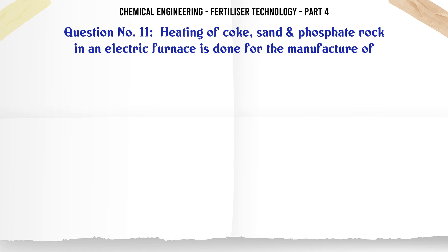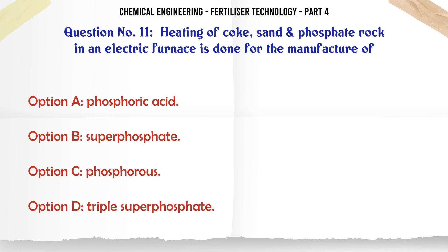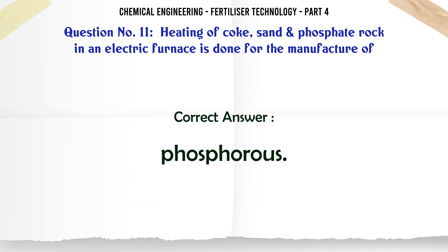Heating of coke and phosphate rock in an electric furnace is done for the manufacture of: a. phosphoric acid, b. superphosphate, c. phosphorus, d. triple superphosphate. The correct answer is: phosphorus.